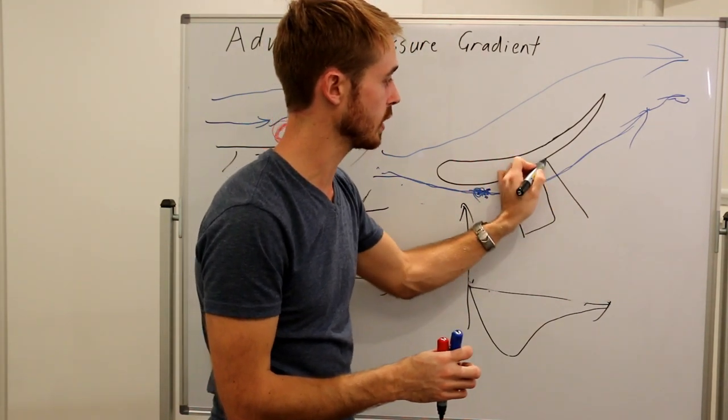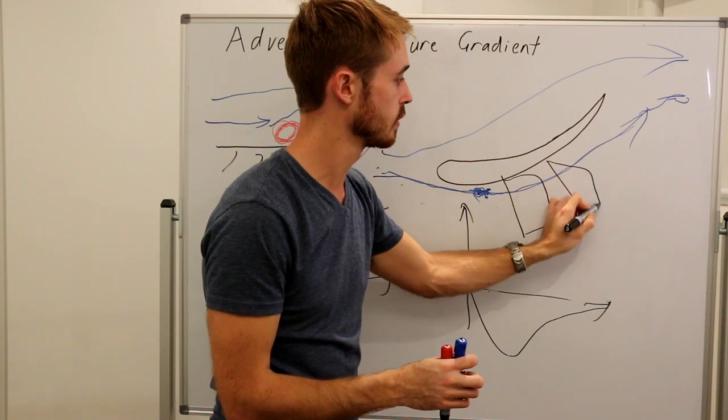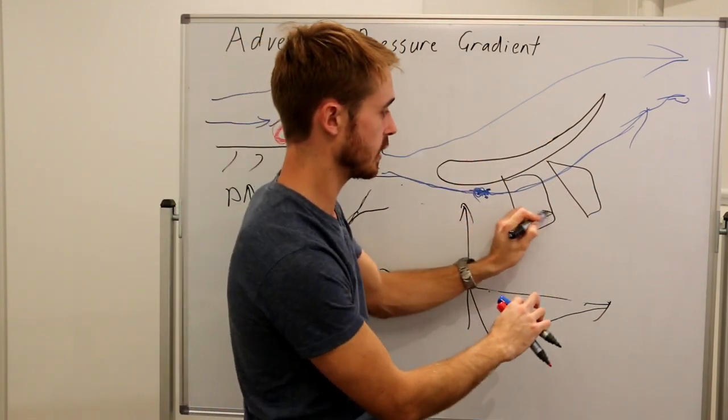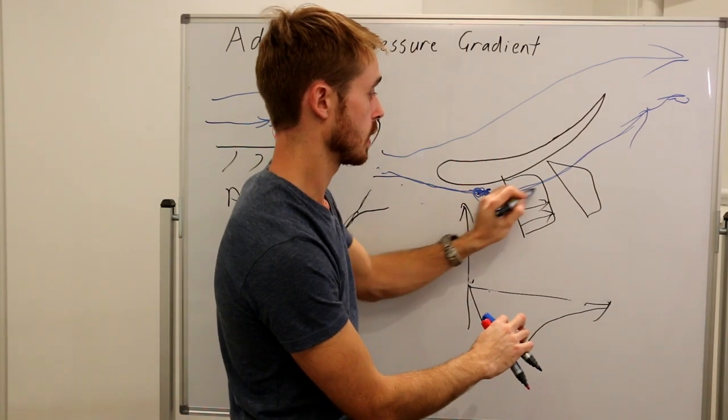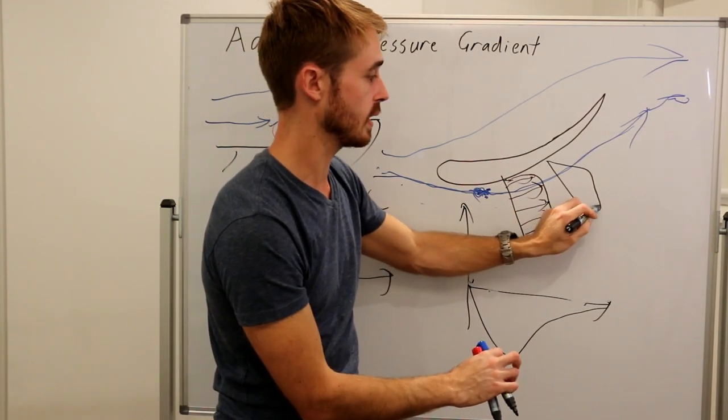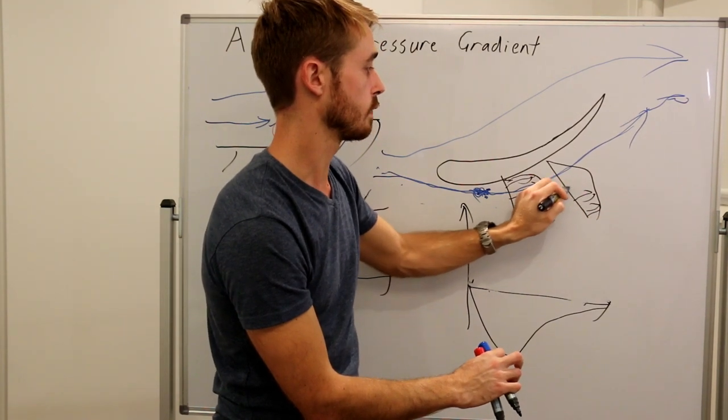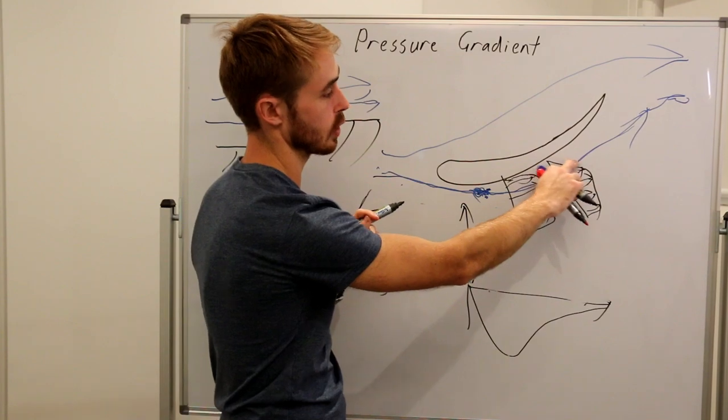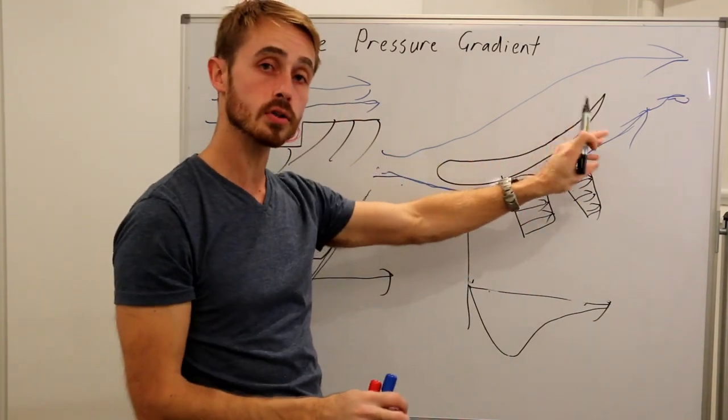It then continues to have a growth out from there. So if you imagine our flow profiles along here, like that, and we come along here it's slightly thicker. So this is our, if you can imagine, this is the flow speed of the free stream. Then as we get close to the surface it gets to zero. And then here our flow speed is faster there, and then gets slower over a bigger distance.